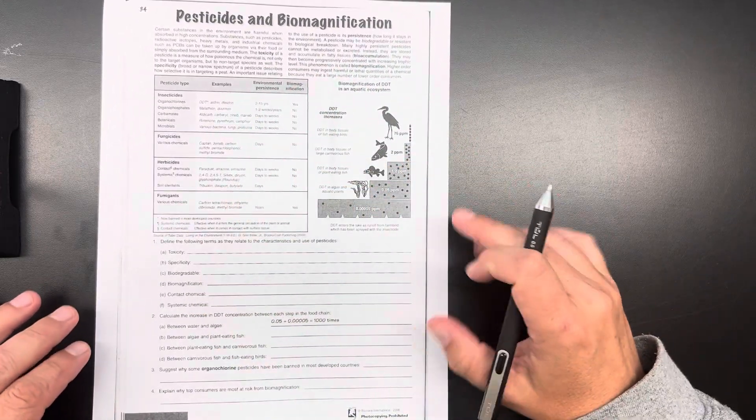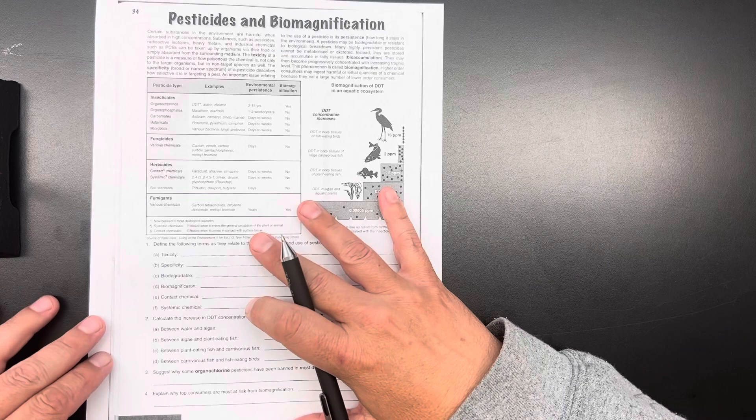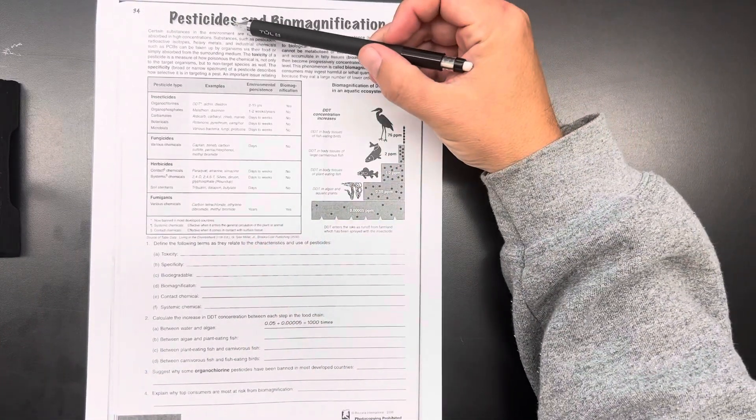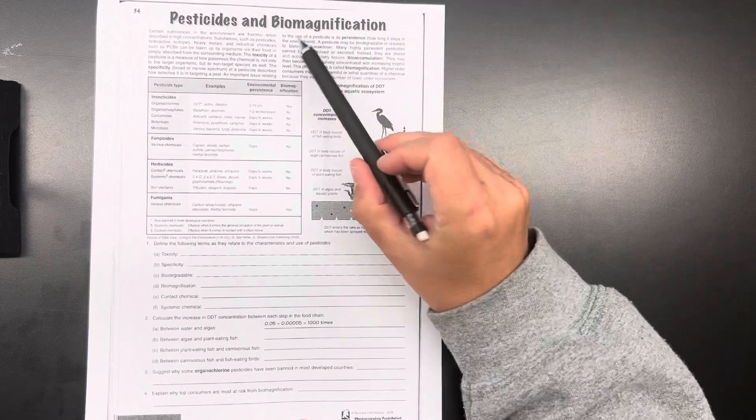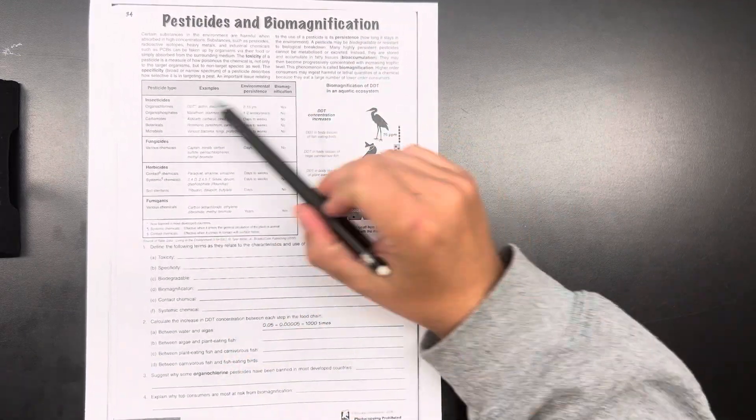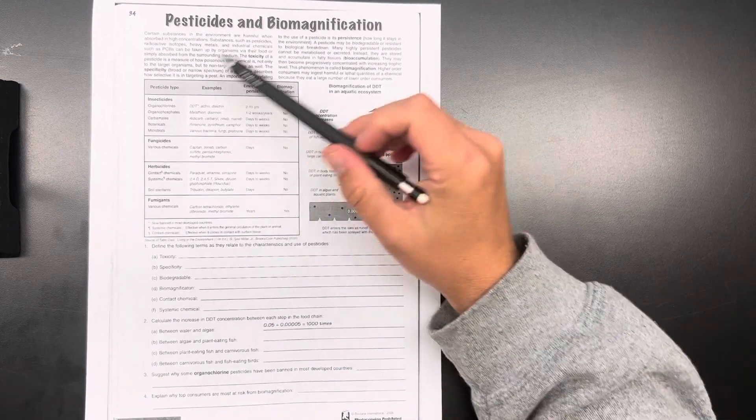But I figured I'd explain it a little bit. Now, this is something that's probably come up before. We're talking about pesticides and something called biomagnification. And this is about pesticides we use in normal agriculture.